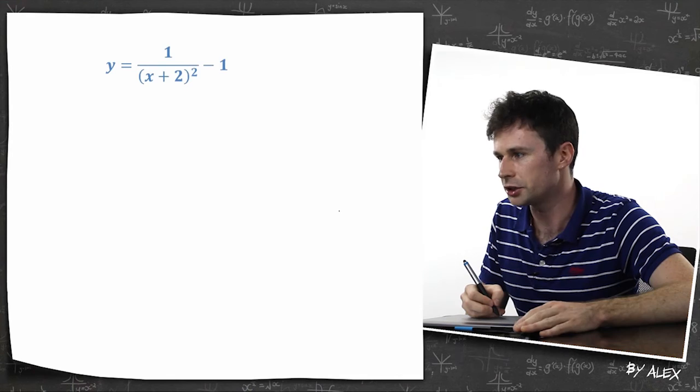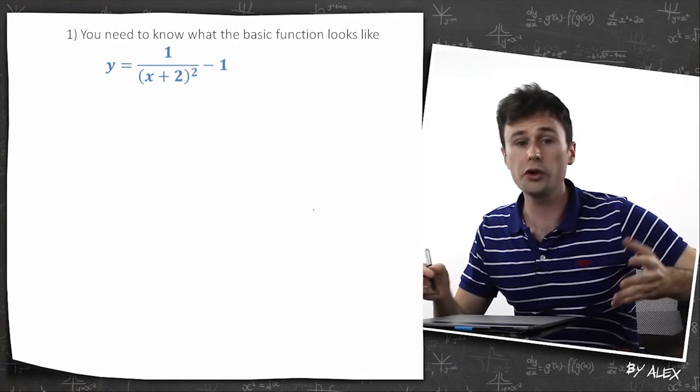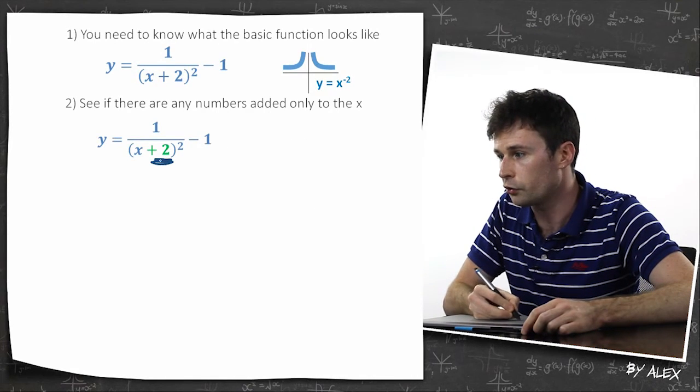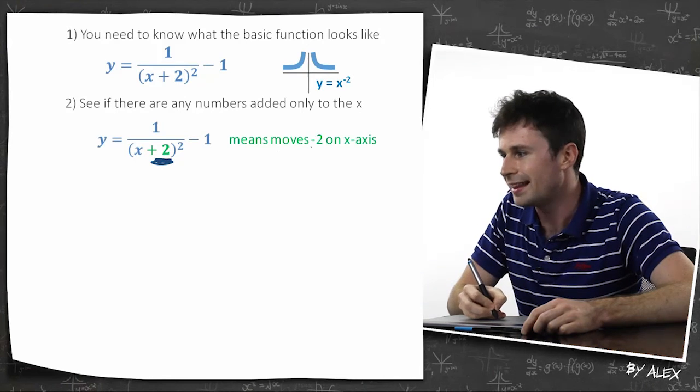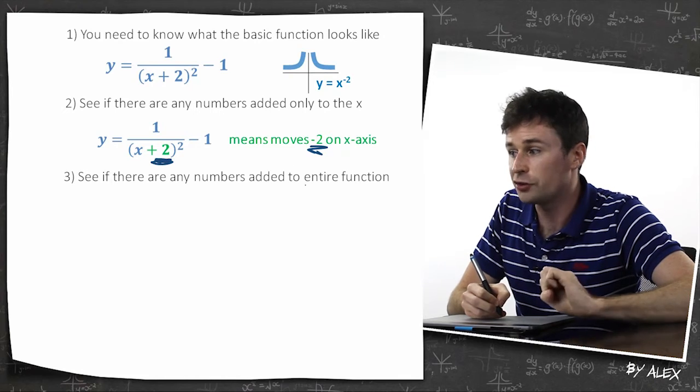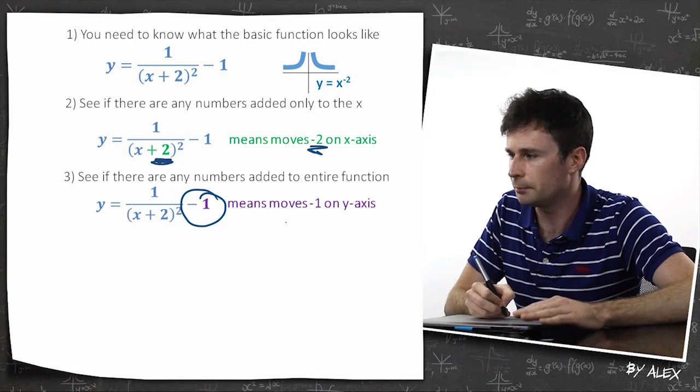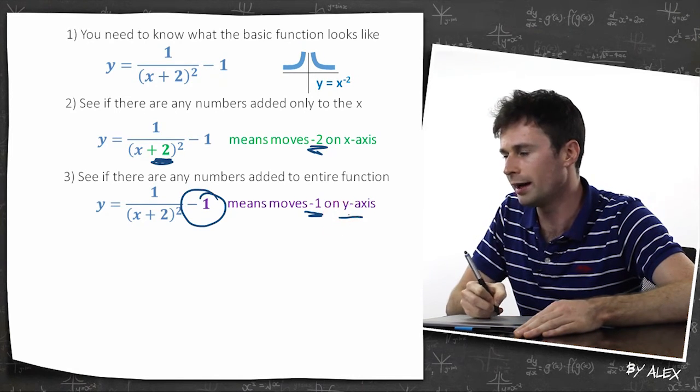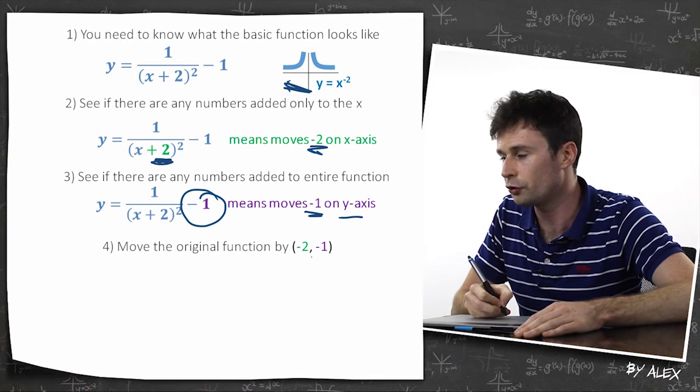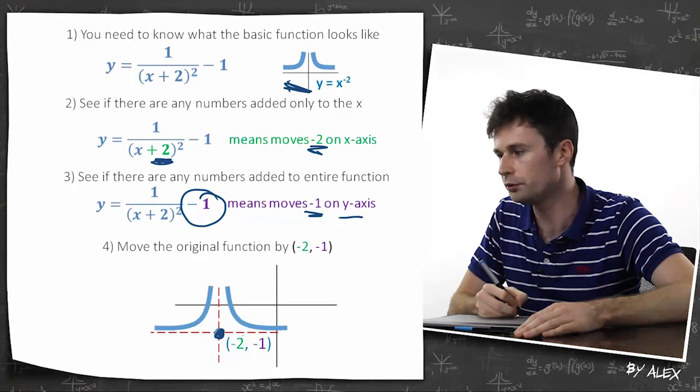So drawing any basic function. First of all, you need to know what the basic function looks like, which is why I showed you all those graphs to begin with. Then we need to see if there are any numbers added only to the x, and there are. There's a two. So that means it's moved negative two on the x-axis. Remember, when it's next to the x, it's opposite. See if there's any numbers added to the entire function, and there is right here. This is added to the entire function. It means it moves negative one on the y-axis. So all we have to do is get this original function up here, and move it by negative two, negative one. And there it is. Same thing, just moved over a little bit.